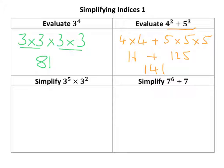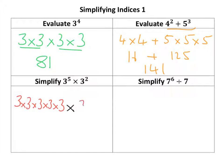If I write 3 to the power of 5 multiplied by 3 squared in long-winded form, I can count all the 3s together. There's 1, 2, 3, 4, 5, 6, 7 — so 3 to the power of 7 should be the answer.